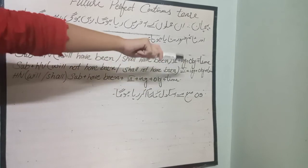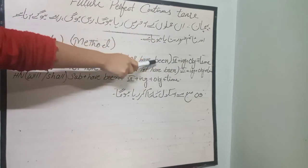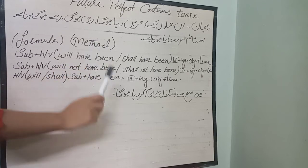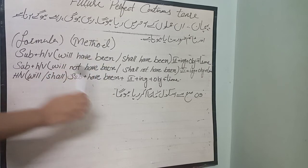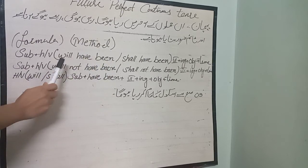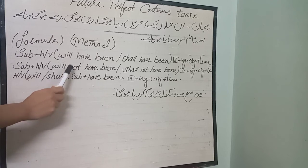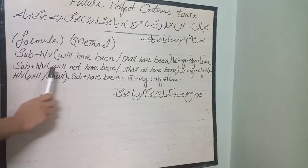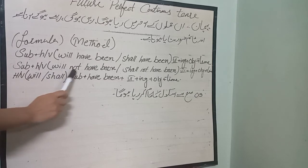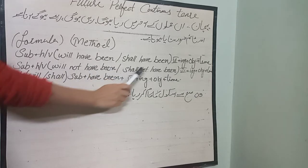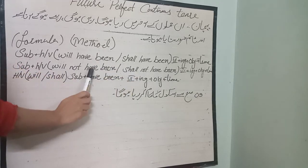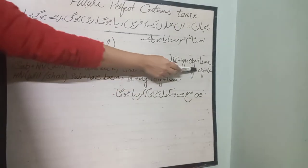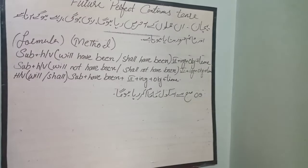For the negative form: subject plus will not have been or shall not have been, then first form plus -ing, plus object, plus time.